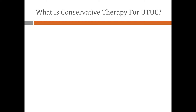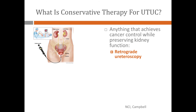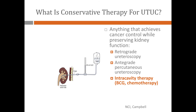Conservative treatments, in general and in a simple way, means using anything we have to achieve cancer control while preserving the kidney. We can do ureteroscopy — go with the scope all the way through the urethra all the way up. Or, if that's not a good option, in some cases we make a small incision in the back and go into the kidney, then pass the scope all the way down from the kidney to the ureter and get to the tumor and try to ablate it with laser and other techniques. For patients with more aggressive high-grade disease where we have to preserve the kidney, we can use chemotherapy or immunotherapy inside the renal pelvis and the ureter, with some controversial results regarding this treatment.